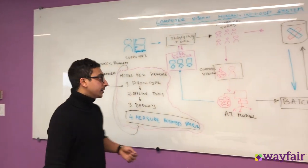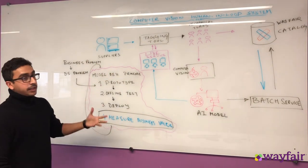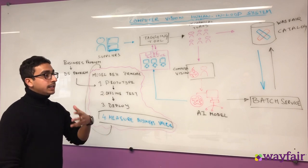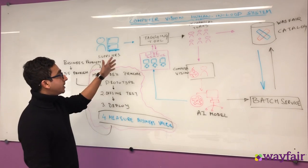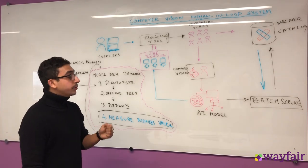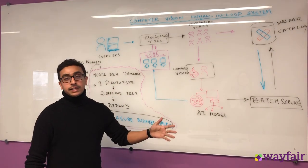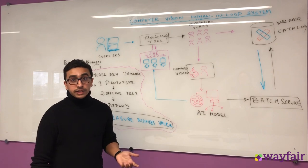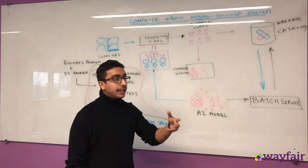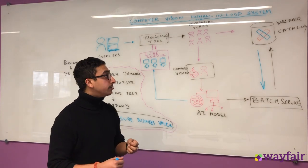So how does this all get started? We'll start from how we get images at Wayfair. Images generally come from our suppliers — partners who want to sell products on our platform provide the product images. These images go to something called a tagging tool. This tagging tool is powered by a live service, which is powered by an AI model that we have designed. Every image gets automatically tagged with all the details we want about it. Then we have mechanical workers who look at these images and their automated tags and correct any missed or incorrect tags.